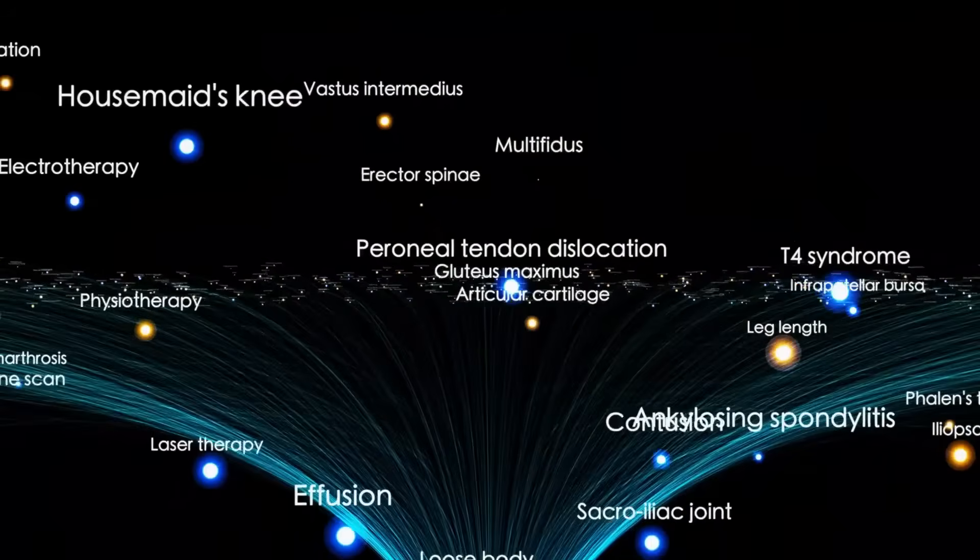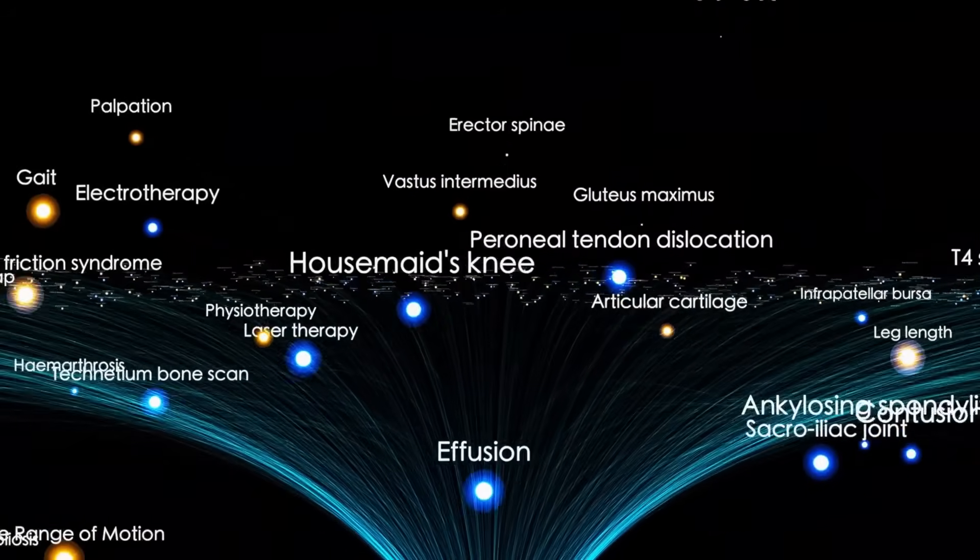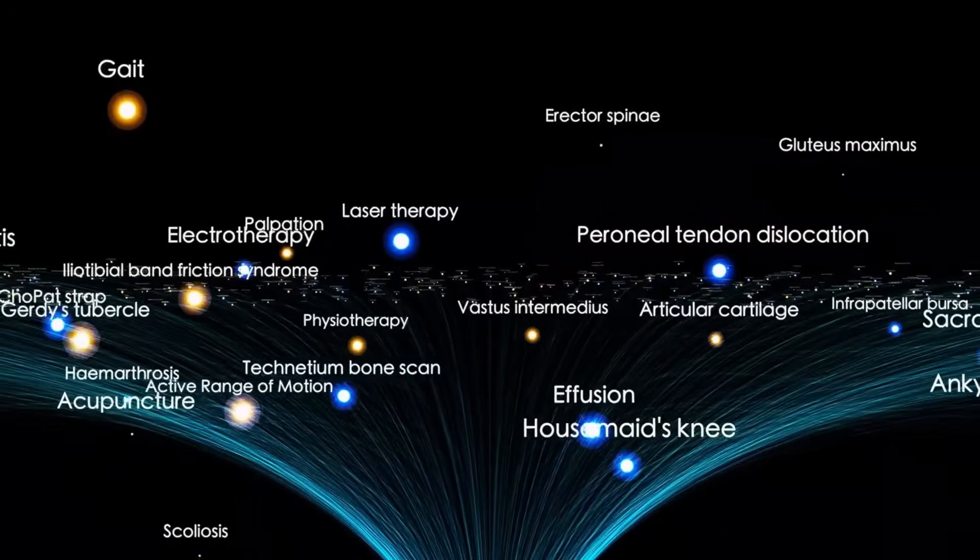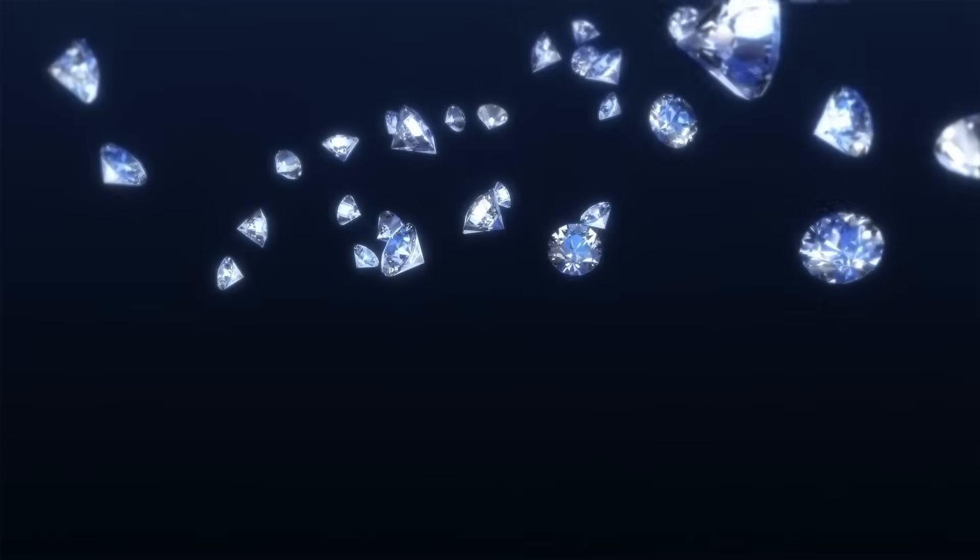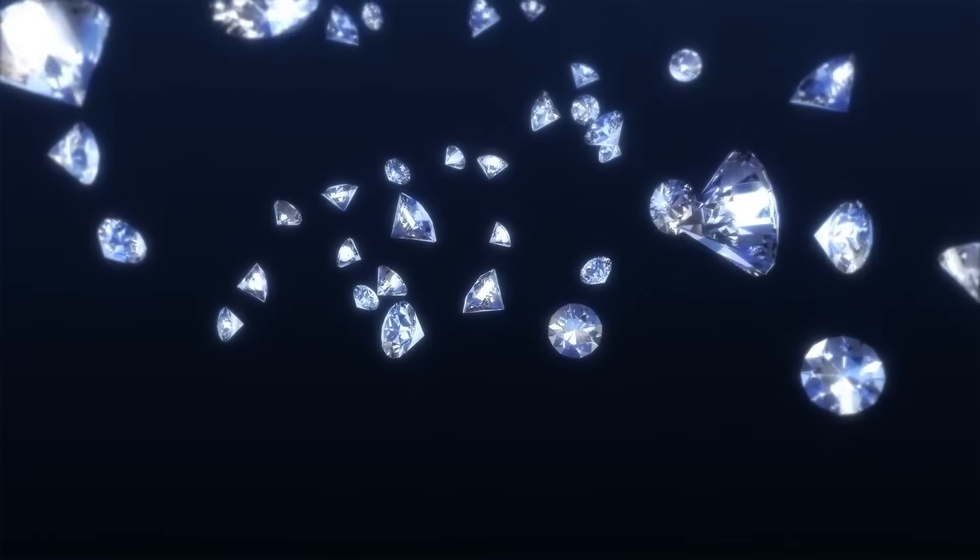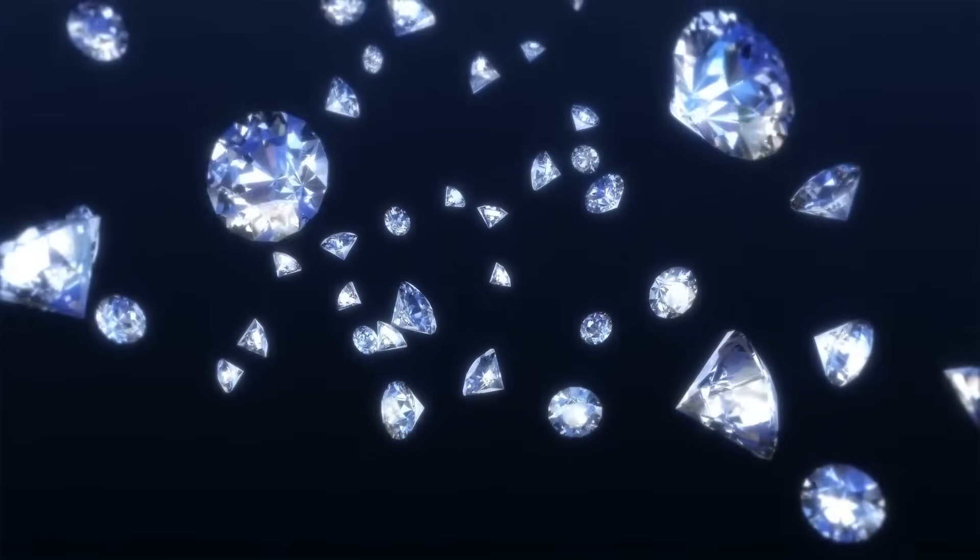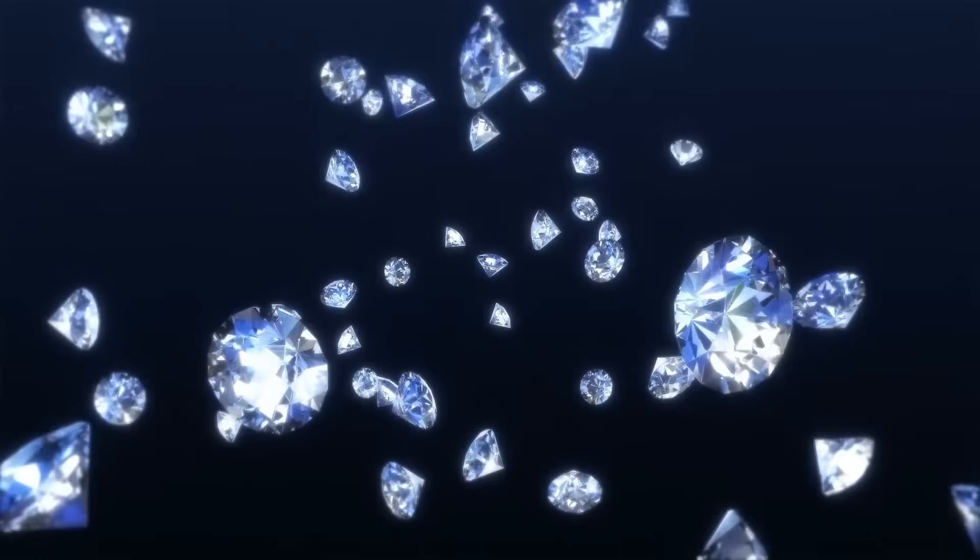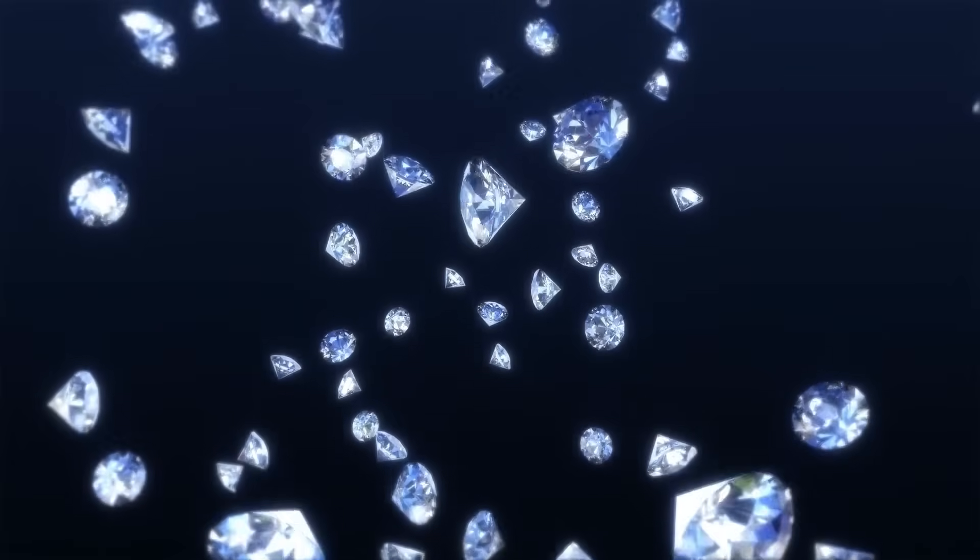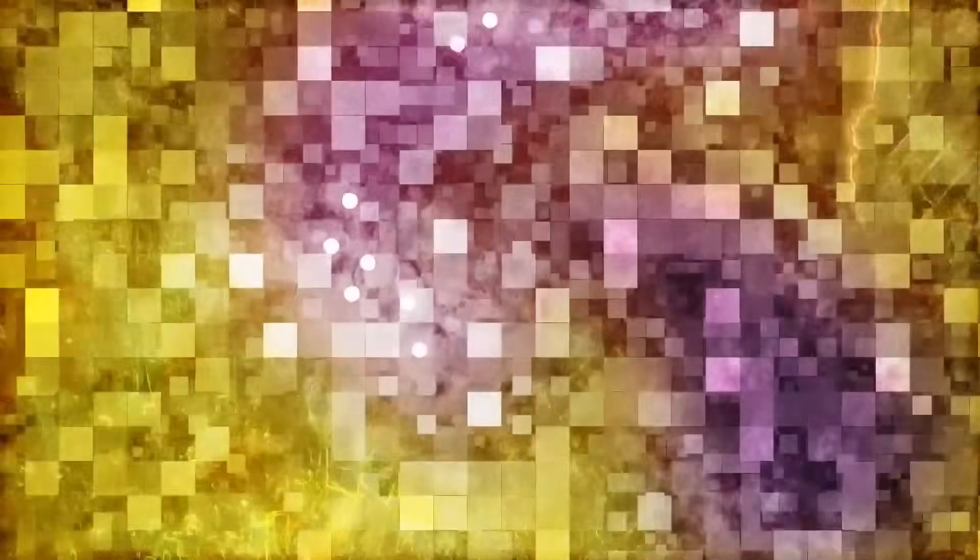For starters, Proxima B is practically in our cosmic neighborhood, just 4.2 light-years from Earth. To put it in perspective, if you could travel at the speed of light, you'd get there in just over four years, about the same amount of time it takes for your favorite TV show to fall into decline, or a presidential term to end.